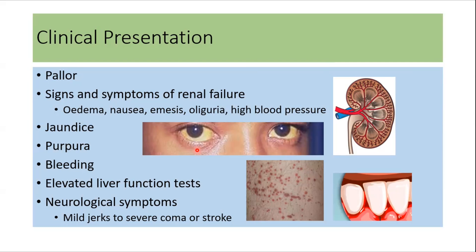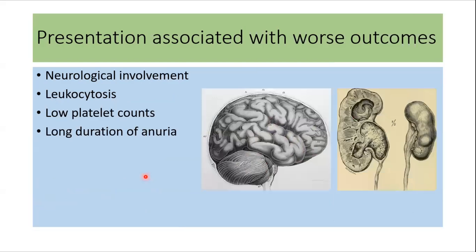The patient usually presents with pallor because of hemolytic anemia. Signs and symptoms of renal failure include edema, nausea, emesis, oliguria, and high blood pressure. The patient can also present with jaundice due to hemolysis, purpura and bleeding because of thrombocytopenia, elevated liver function tests, and seizure, coma, or stroke if there is neurological involvement. Poor outcomes are associated with neurological involvement, leukocytosis, low platelet counts, and long duration of anuria.